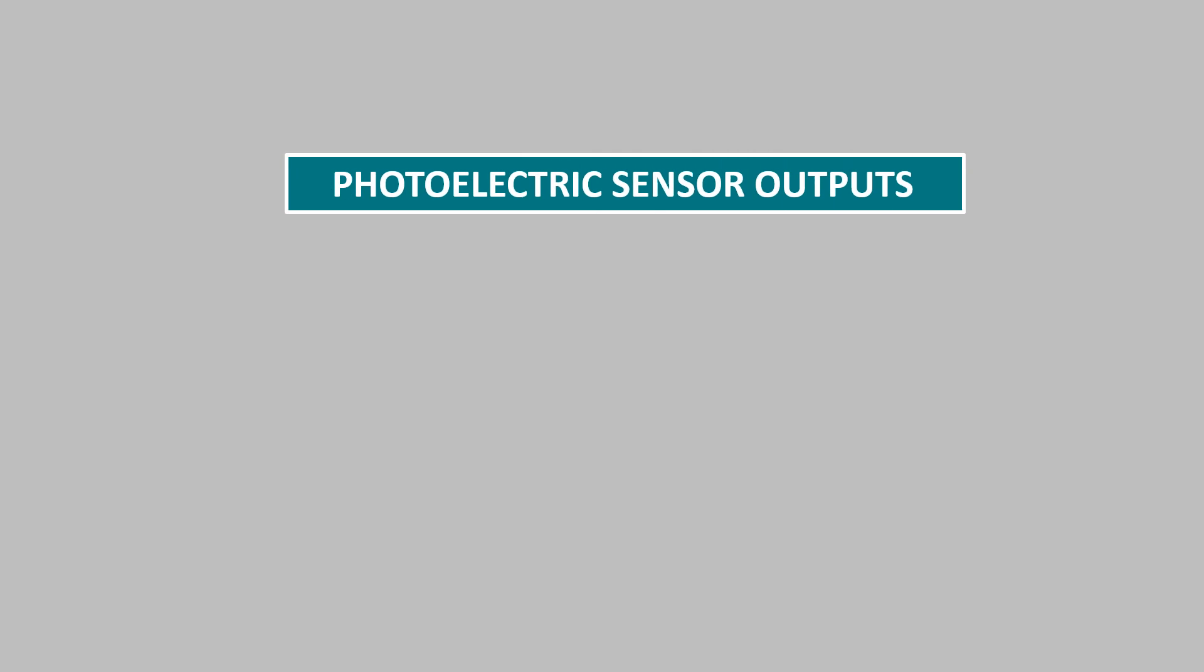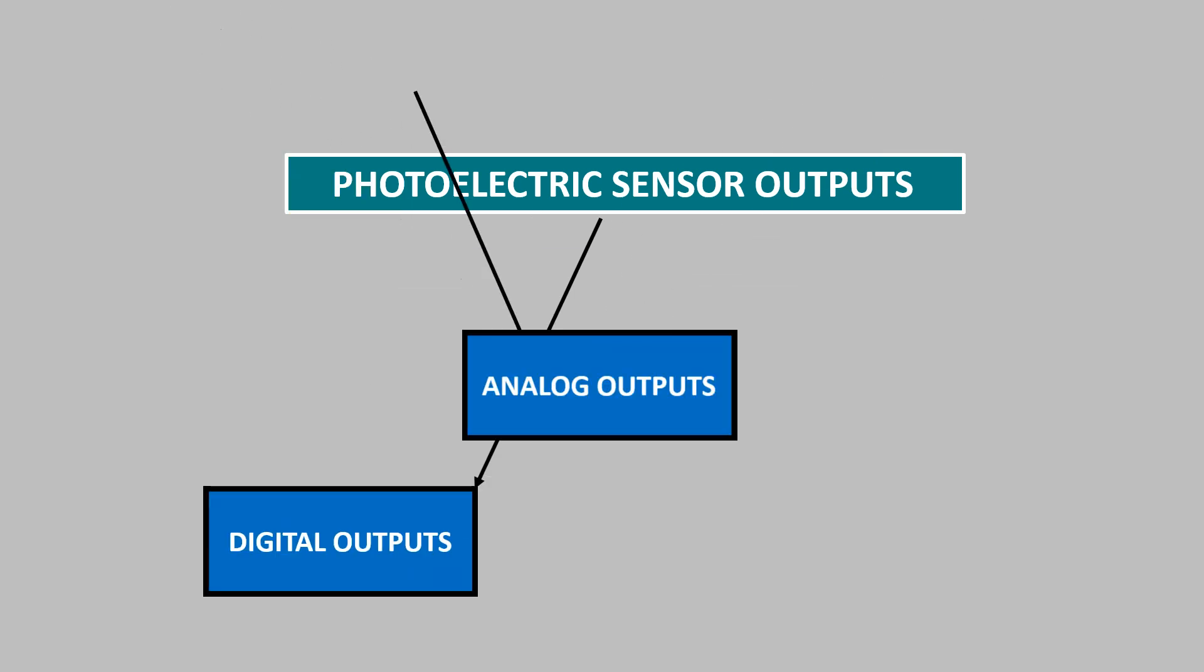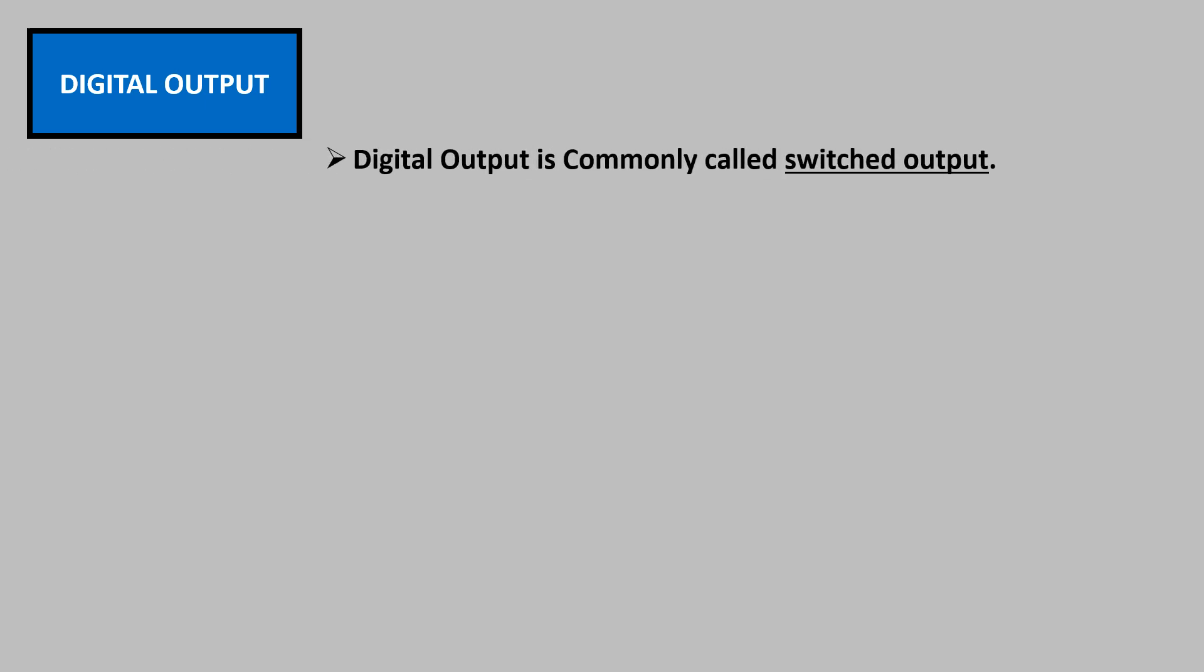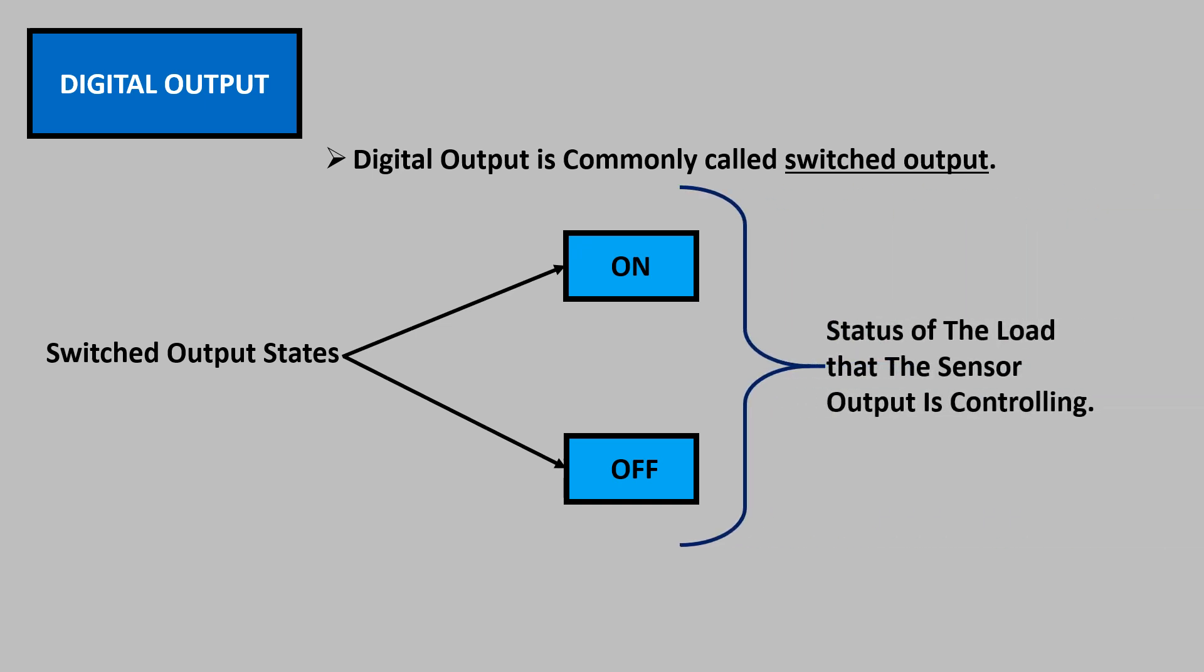Now let's discuss photoelectric sensor outputs. The output of photoelectric sensors are of two types: digital or analog outputs. Digital output is commonly called a switched output. A switched output has only two states, on and off. This on and off states commonly refer to the status of the load that the sensor output is controlling. The load might be an audible alarm, an indicator light, a switching relay, or a PLC.